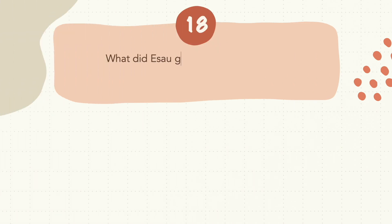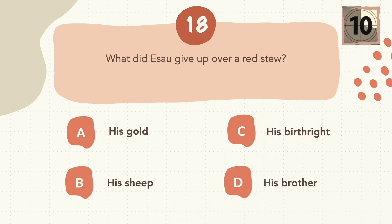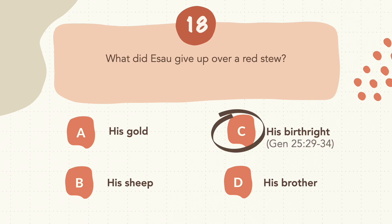Question 18: What did Esau give up over a red stool? The correct answer is C, his birthright.